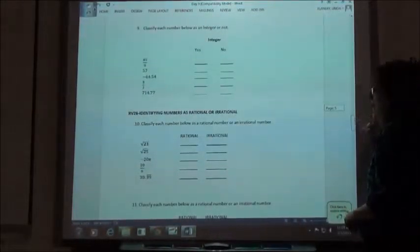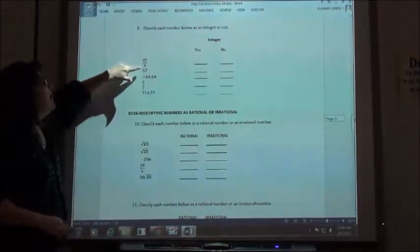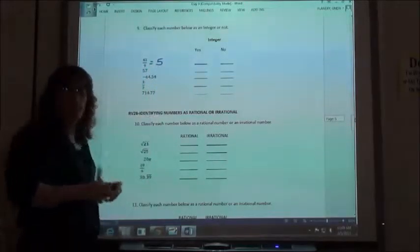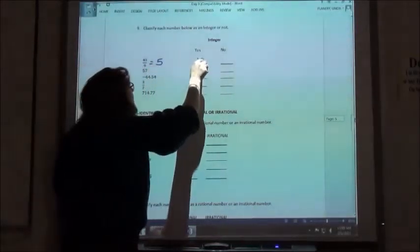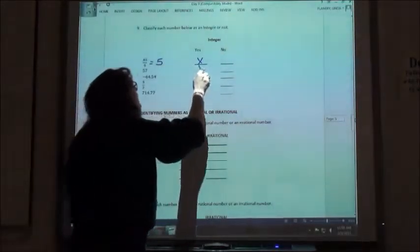Number 9. 45 ninths. 9 does divide into 45 five times, nice and evenly. Yes, that is an integer. 57, nice whole number, it is an integer.